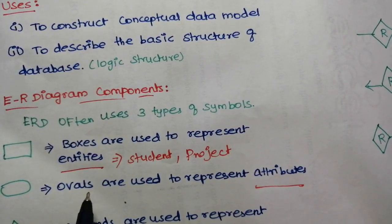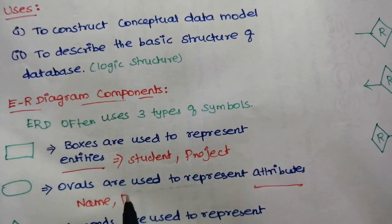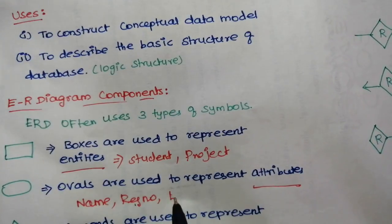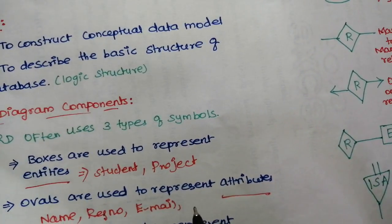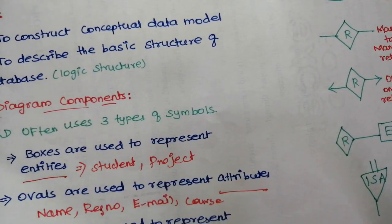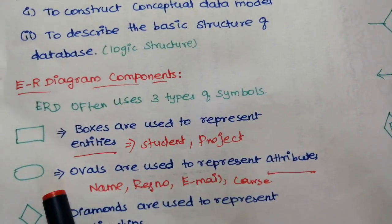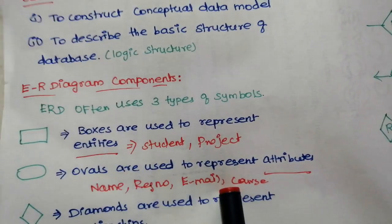Ovals are used to represent attributes. What are attributes? Student attributes, for example: name, register number, email, course. So attributes belong to an entity and are represented using oval shapes.